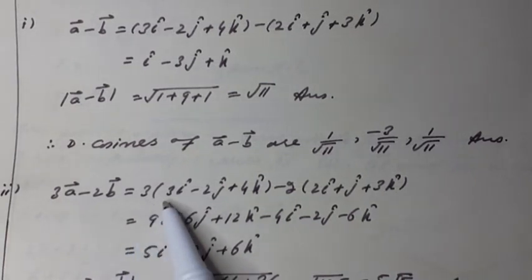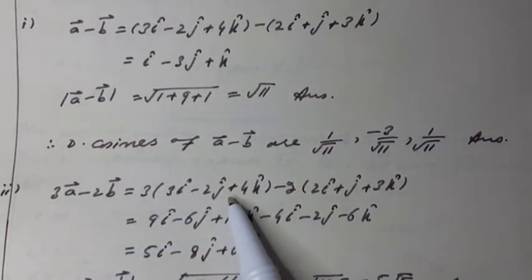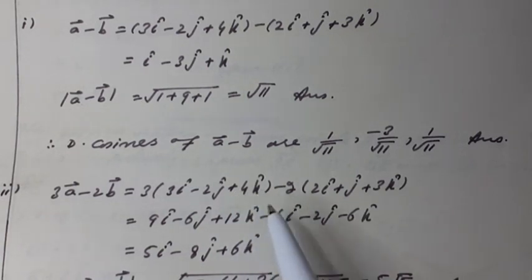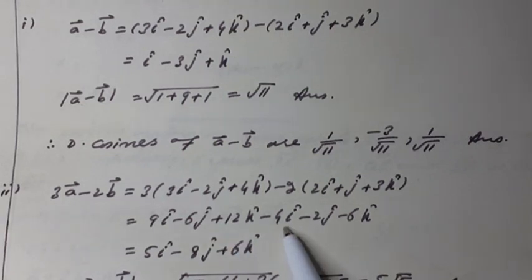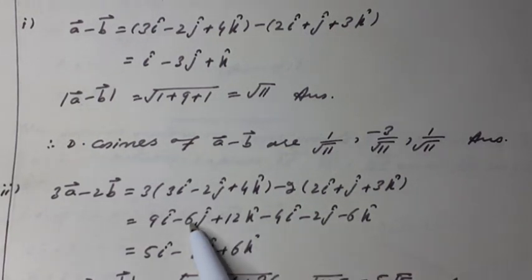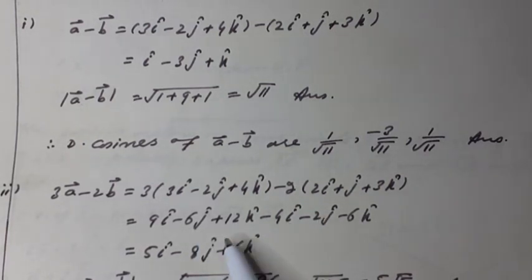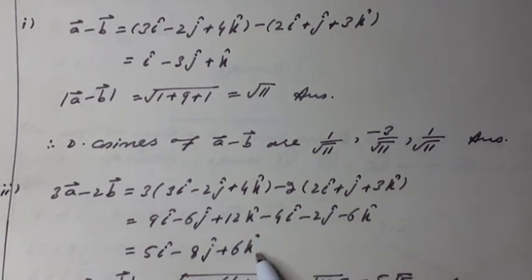This equals 9i unit vector minus 6j unit vector plus 12k unit vector minus 4i unit vector minus 2j unit vector minus 6k unit vector. Combining like terms: (9i − 4i) = 5i unit vector, (−6j − 2j) = −8j unit vector, (12k − 6k) = 6k unit vector.